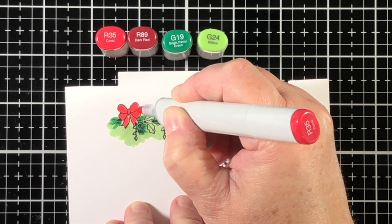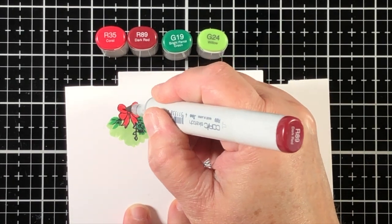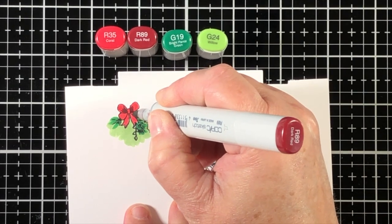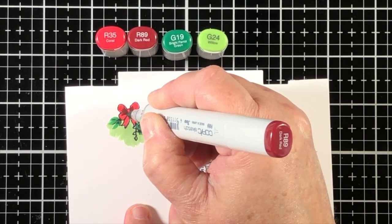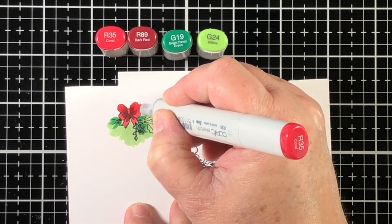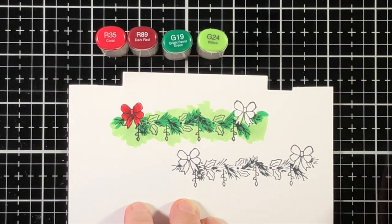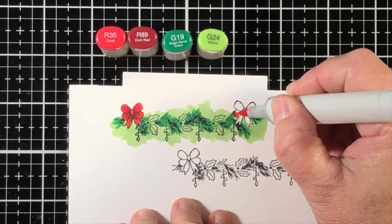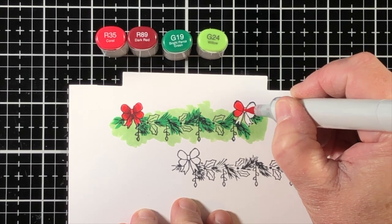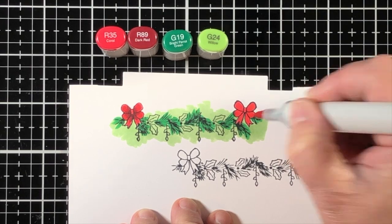So I chose to just use a really light Copic marker which is the G24 and color that entire area that would be the background and the foreground. I just colored all of them and then I'm using that G19, that's the darker green, to go back in and make some flick motions for what would be like the evergreen bow part of it.